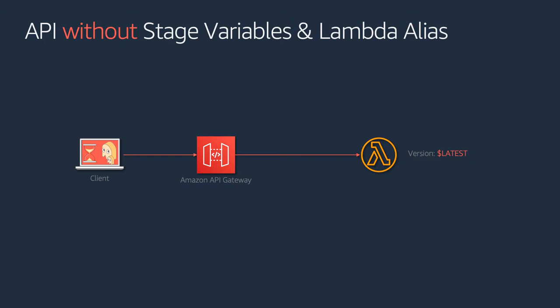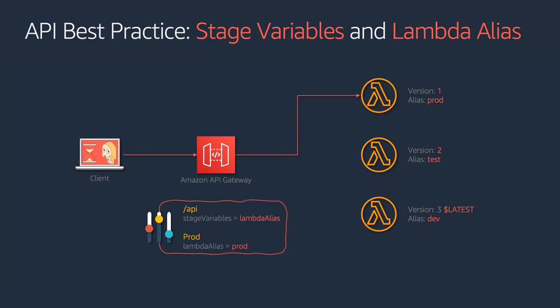Today we are going to build two different architectures. The first one is an API without stage variables and without Lambda aliases - you have a client, an API Gateway, and a Lambda function, and any changes you make to that Lambda function automatically get published to your end user. That is not what we want. We want different environments for test users and development. So we are also going to deploy one more API which is going to have stage variables and Lambda aliases.